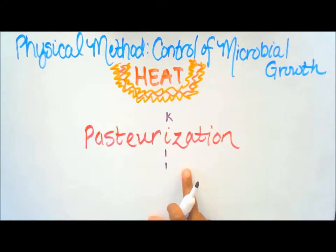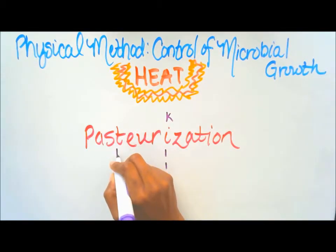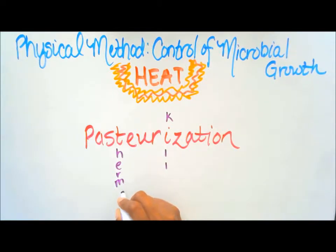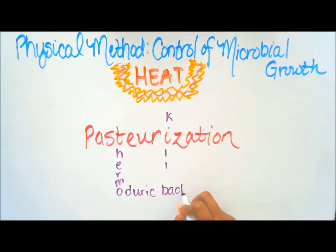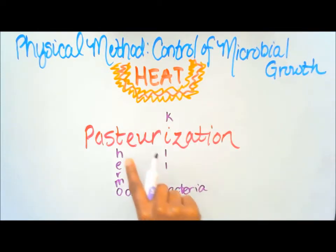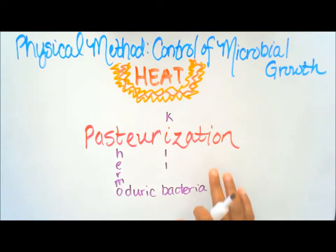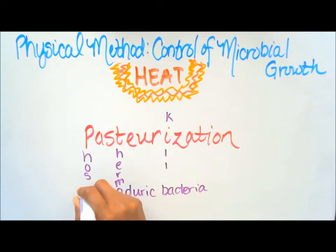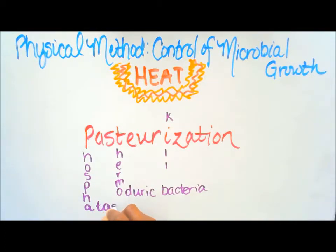But remember, it doesn't kill all organisms. There are some heat-resistant bacteria, so we use the T in pasteurization to remember thermoduric bacteria. For the test used in pasteurization, we use the P in pasteurization to remember the phosphatase test.